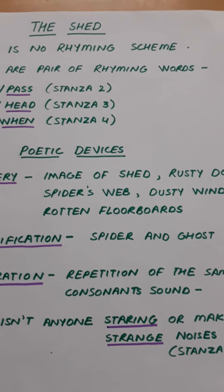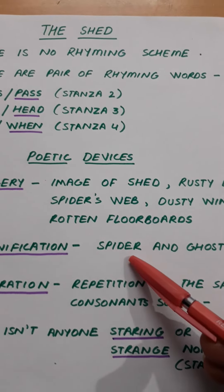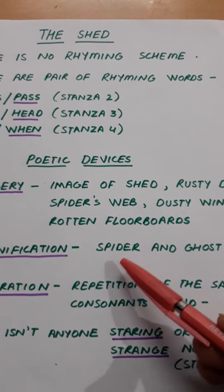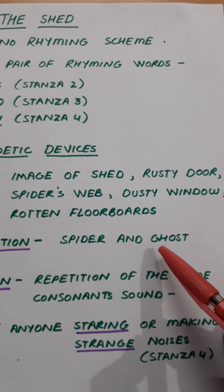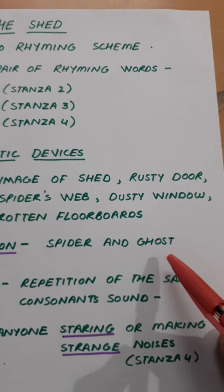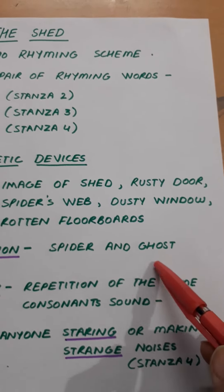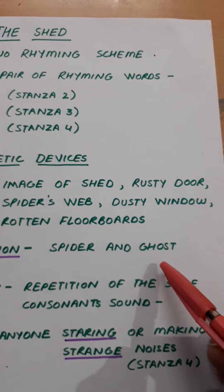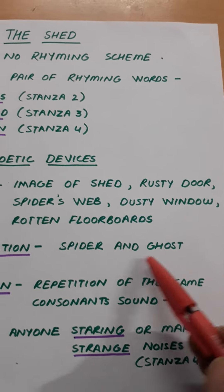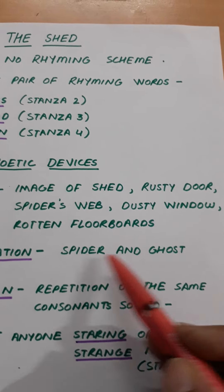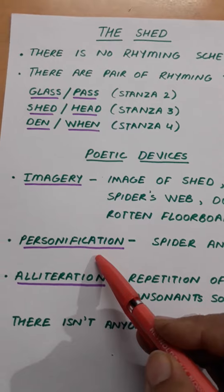It has been told that the spider has gone somewhere else and has left the shed, meaning human qualities have been given to the spider. It has also been mentioned that the elder brother of the poet says that a ghost lives in that shed. So both the spider and ghost are personified in this poem.